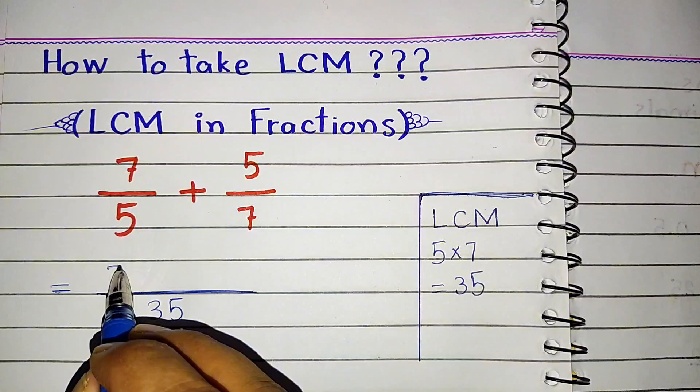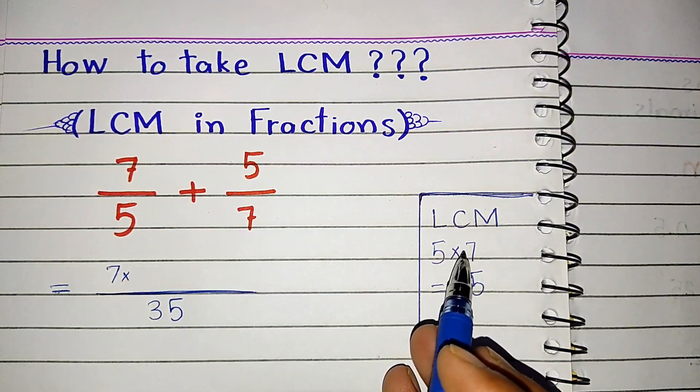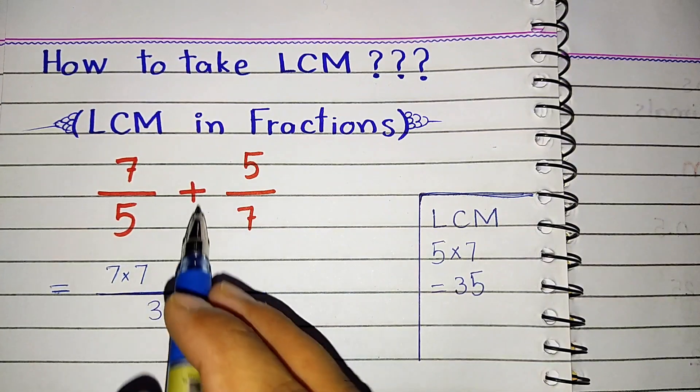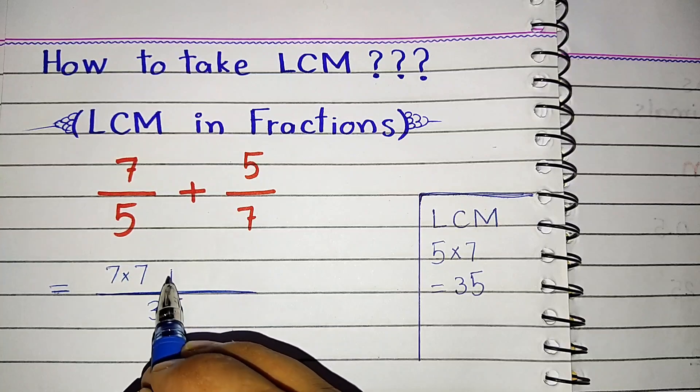We already have 7, so we can multiply 7 with this 7. So 7 times 7. Then we have the sign of addition. We can put the sign of addition.